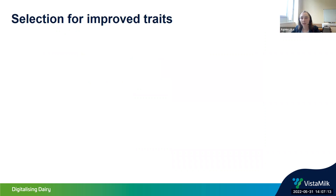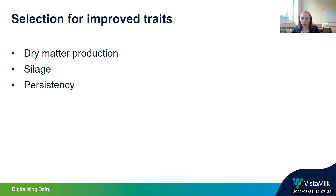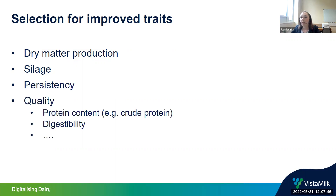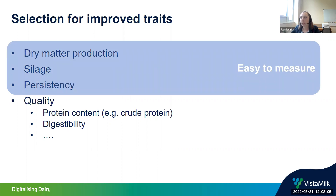There are different traits that farmers can be interested in. They are mostly interested in dry matter production as well as how much silage they can get from the field for winter. We are also interested in persistency, which is a change in yield over time — we want cultivars that are great in year one but also very good in year five. We are also interested in quality, such as crude protein content and water-soluble carbohydrates.